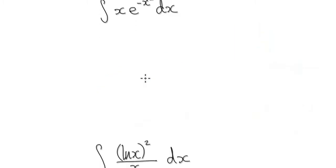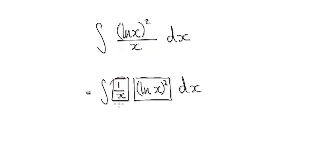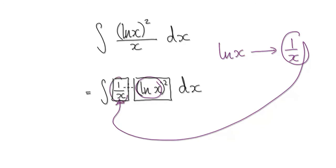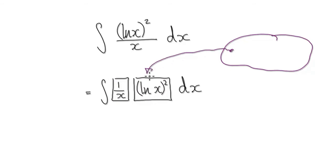Next example. To integrate this, visualize this thing here as being one block multiplying with another block — because if I give you a fraction and ask you to multiply, it gets multiplied to the top. Visualize this as being this. Notice that when you differentiate natural log of x, it gives you 1 over x. And this thing here is exactly the same. So you know it's going to be easy to integrate — let's just guess. Me asking you to integrate this is the same as asking you to find something that when you differentiate it, gives you this.